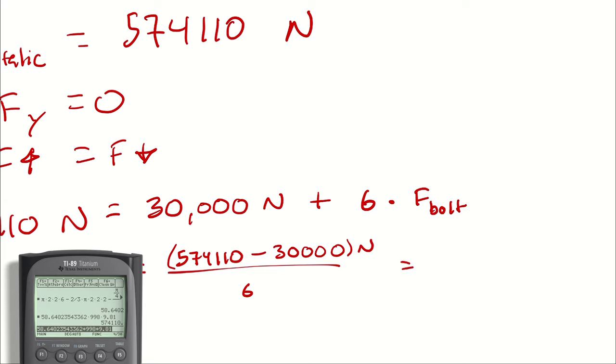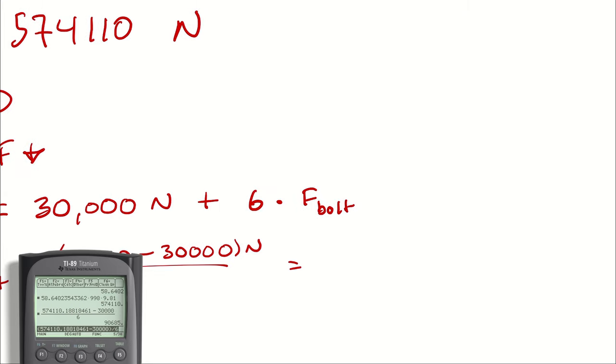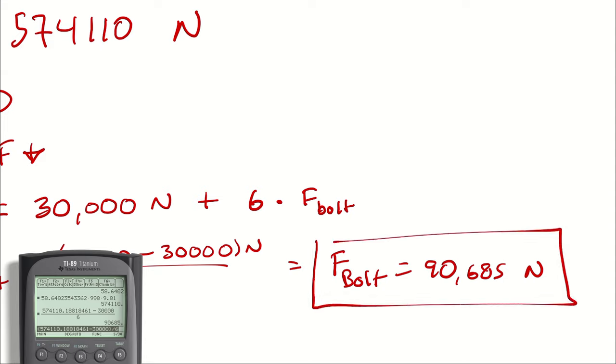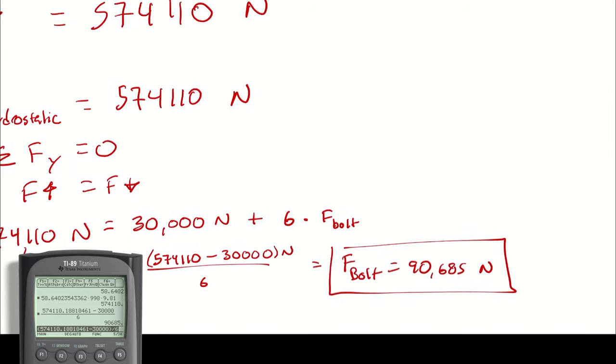F bolt is going to equal 574,110 minus 30,000 divided by six newtons. Each bolt is supporting 90,685 newtons or 90.685 kilonewtons.